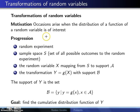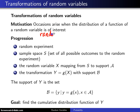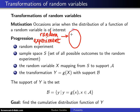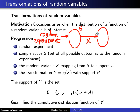Here's the progression. We start out with a random experiment — that could be the flipping of a coin. You might have a sample space S, which contains all of the outcomes to that experiment. If it's the flipping of a coin, there are only two elements in the sample space S: heads and tails. Then there is a random variable X that maps every point in the sample space S to some support set, script A.